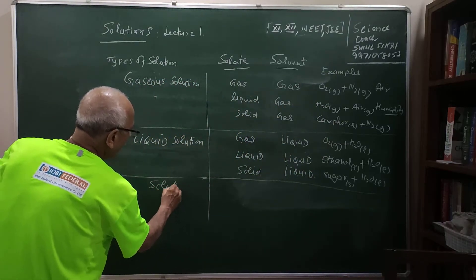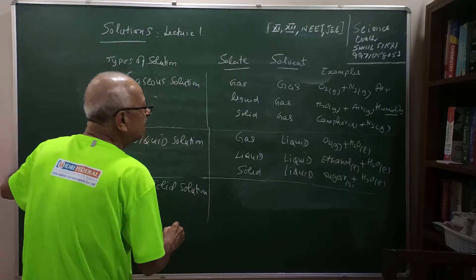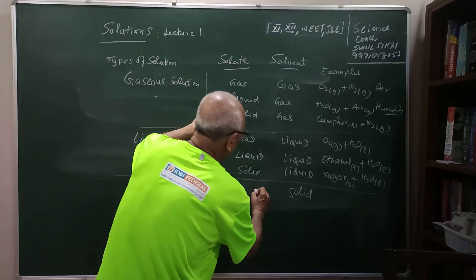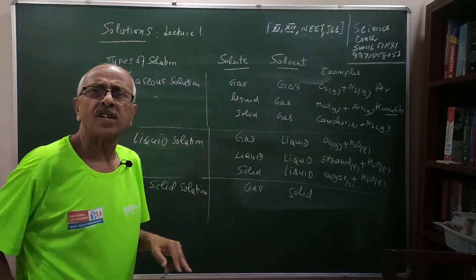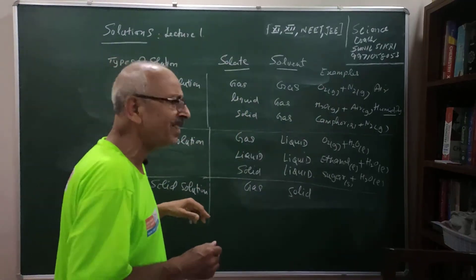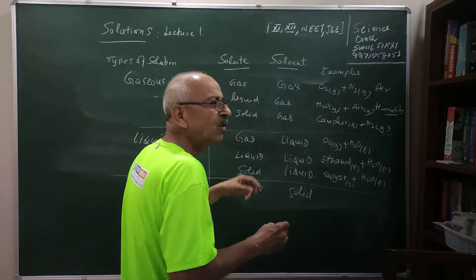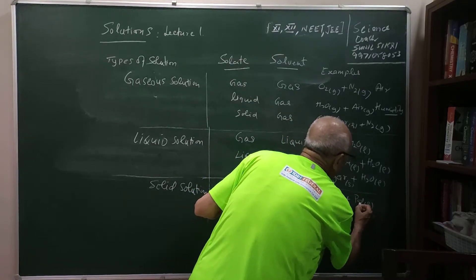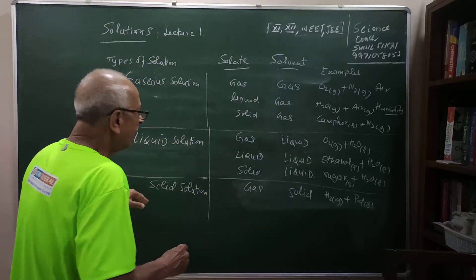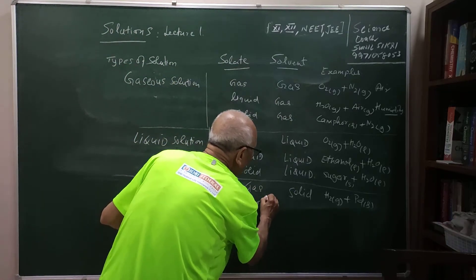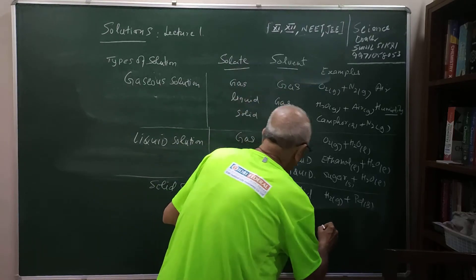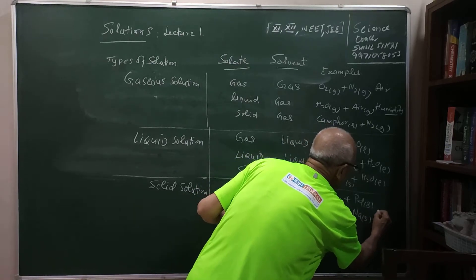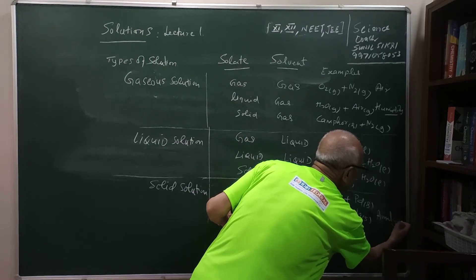Solid solutions have a solid solvent. I can put a gas in a solid — for example, hydrogen gas gets absorbed over the surface of palladium, nickel, or platinum catalysts used in organic chemistry. That is a gas-in-solid solution. I can also put a liquid in a solid — for example, mercury (a liquid) put in solid sodium forms an amalgam, which finds great uses in chemistry.